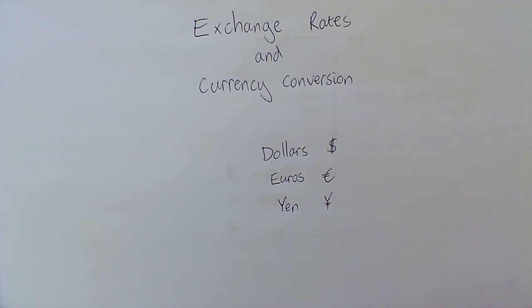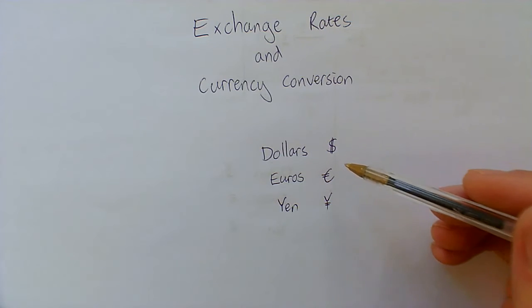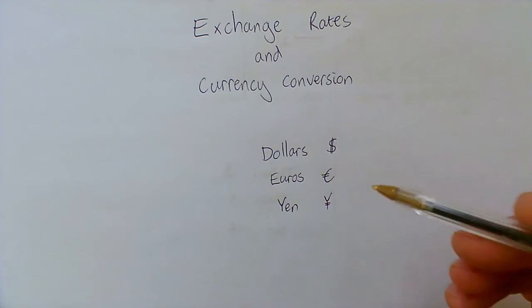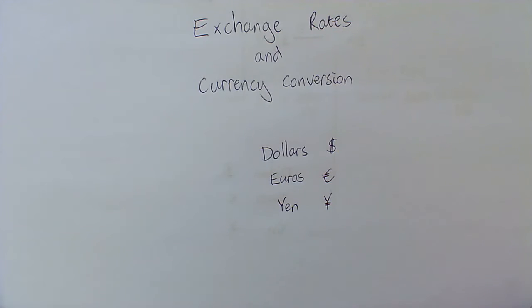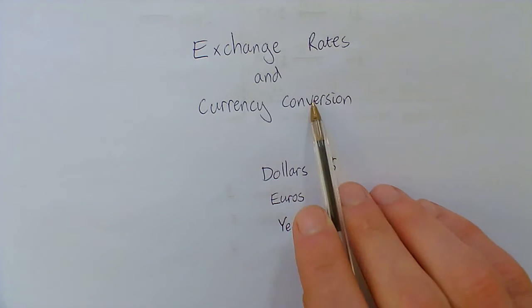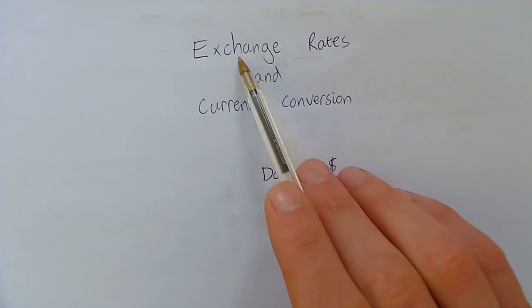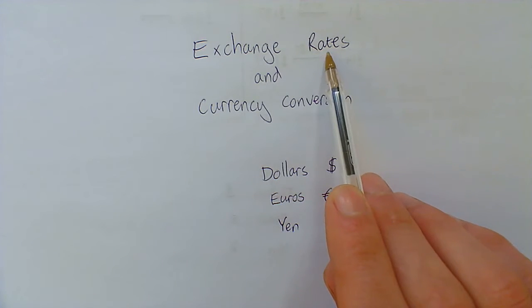So each of these currencies exist around the world, but they're not all worth the same amount. So if I go to America and I have one pound, it won't be exactly the same as one dollar. So the way that we change between the two is called currency conversion. And how many of a currency you get for one pound is called its exchange rate.